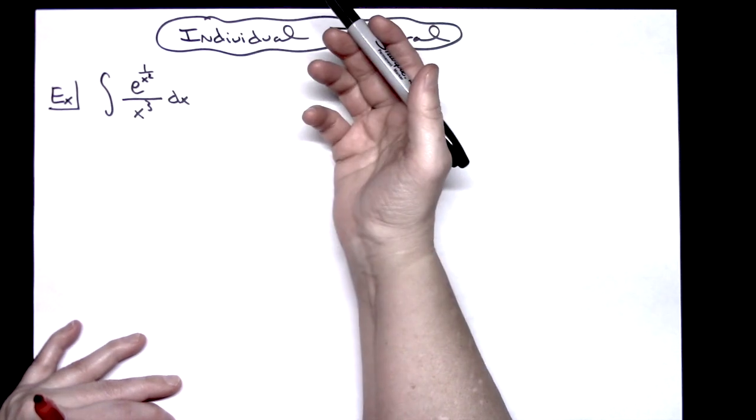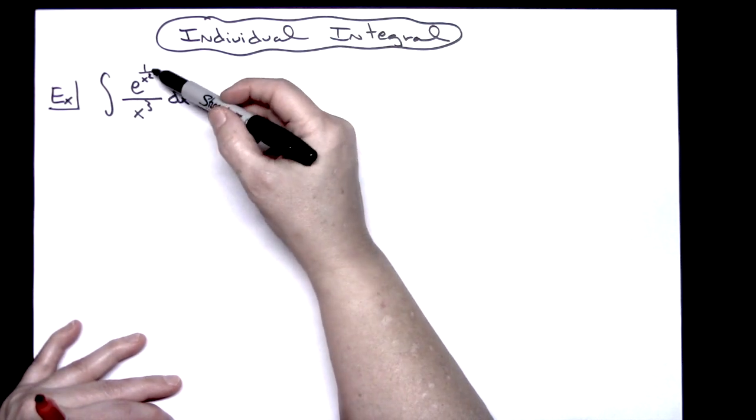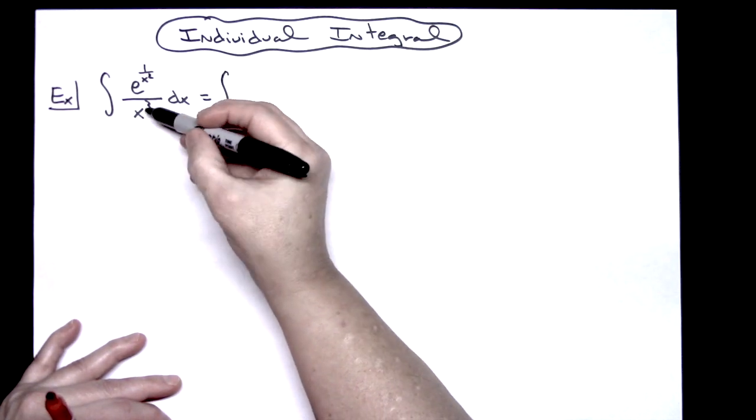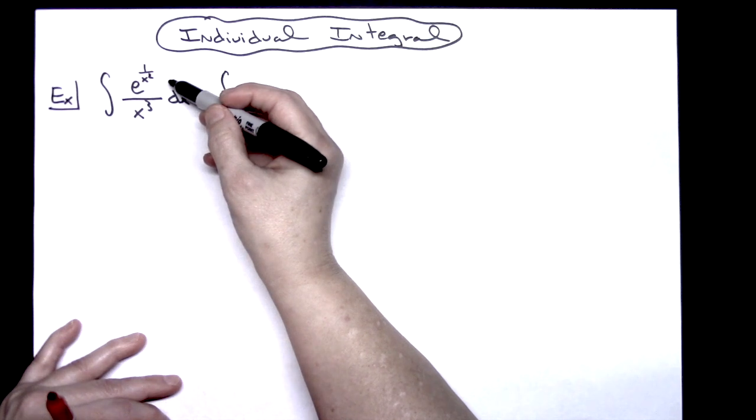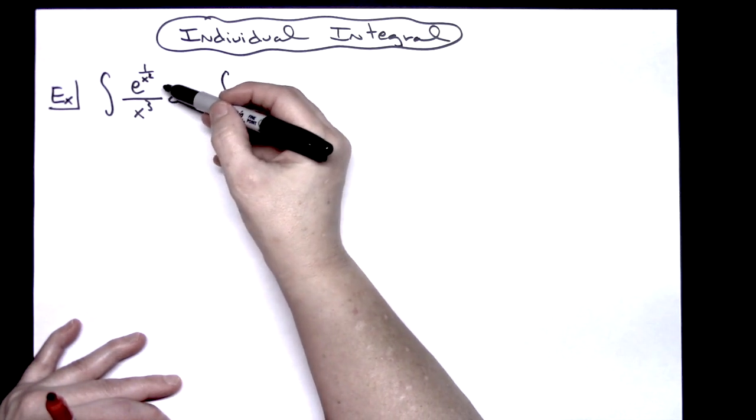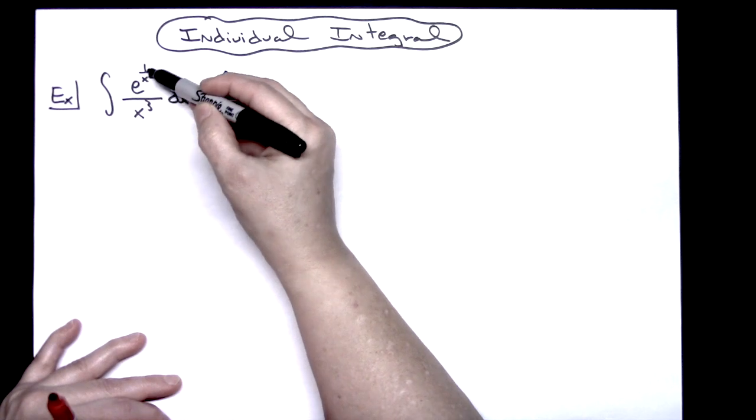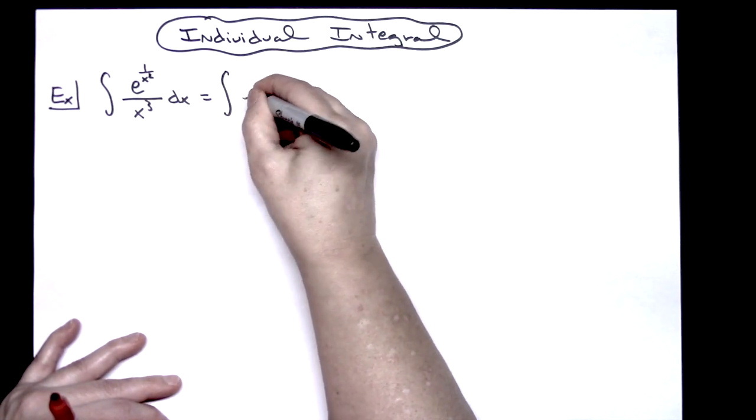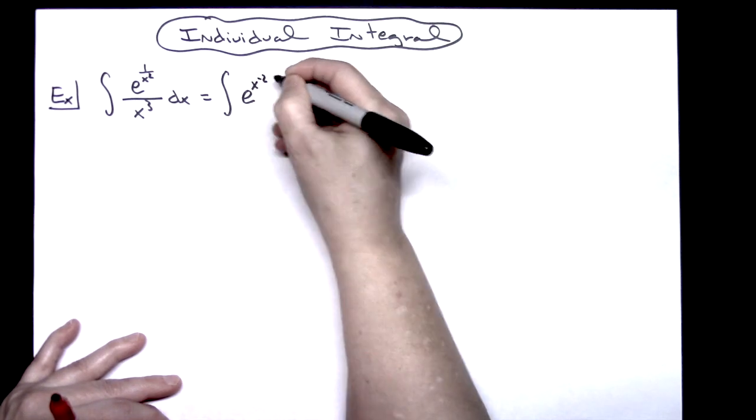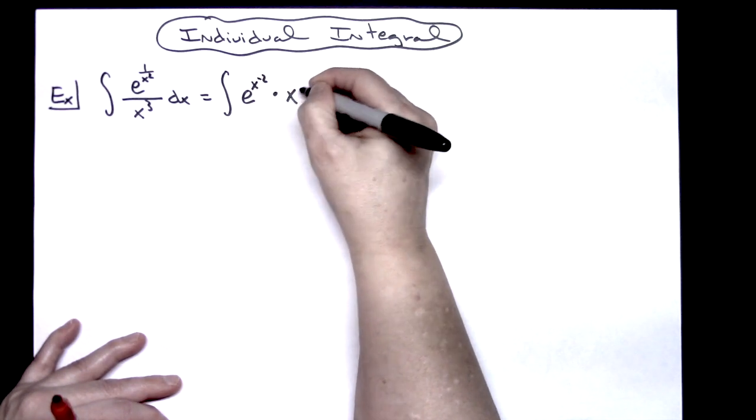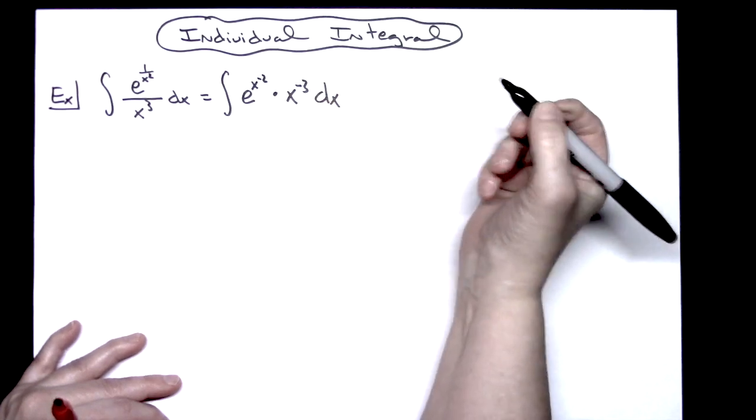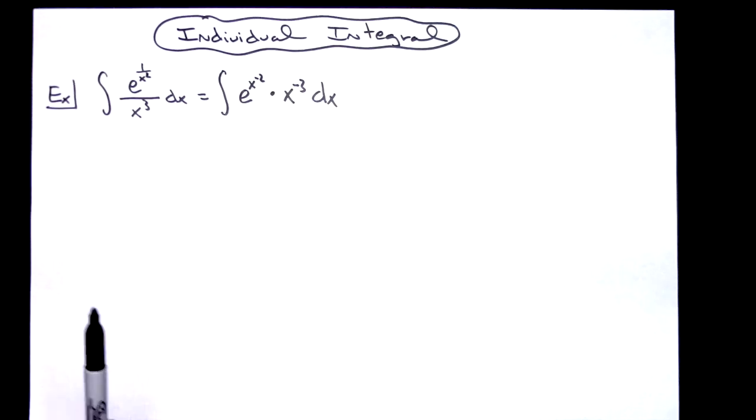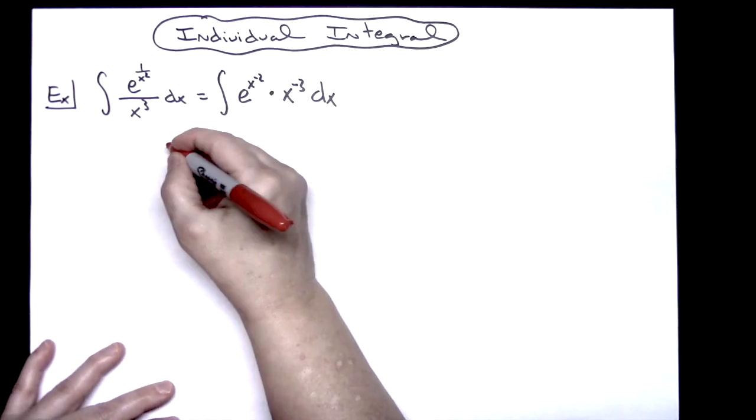So what I want to do is I'm going to do my laws of exponents. I'm going to take this x to the third and I'm going to pull it up so that I've got a multiplication going on here and I'll have an x to the negative three. And then here I also want to do my laws of exponents so that I have an x to the negative two there. So I'm going to have an e raised to the x to the negative two times an x to the negative third dx. That's going to allow us then to take some derivatives here a little bit easier and make the u-substitution work really nice.